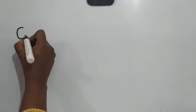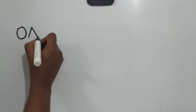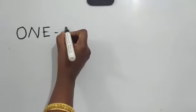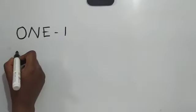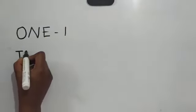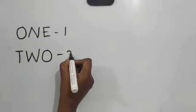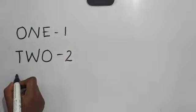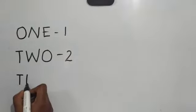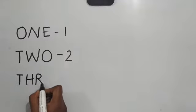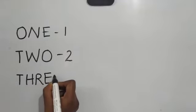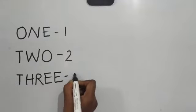Take your pencil and write number names 1 to 6. Say and write. O, N, E. One. T, W, O. Two. T, H, R, E, E. Three.